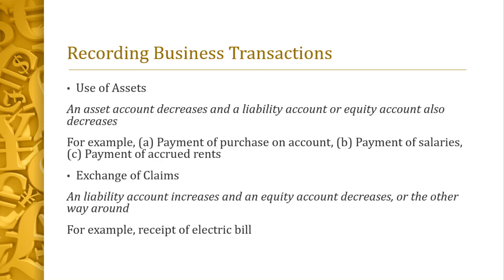For use of assets: an asset account decreases and a liability or equity account also decreases. For example, payment of purchases on account — cash decreases and accounts payable decreases. For payment of salaries, it depends: if it is accrued salaries, the liability account decreases and cash decreases. If it is salary expense, it is treated as an acquired expense.